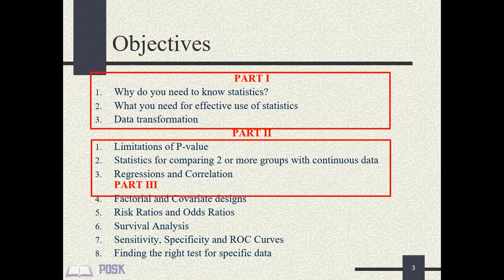In this second lecture in the series, we will look at the limitations of the p-value and introduce you to the confidence interval — the alternative to the p-value. We will then look at some statistical methods for comparing two or more groups when the data is continuous, and end the lecture by digging into regression and correlation.